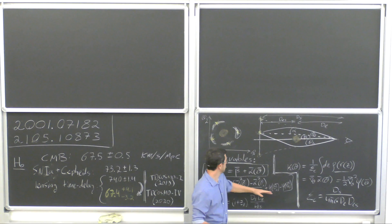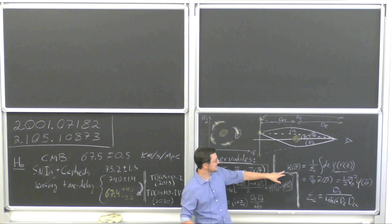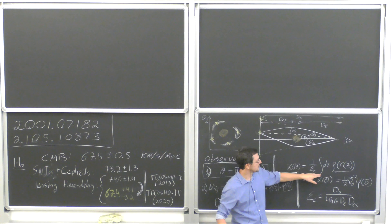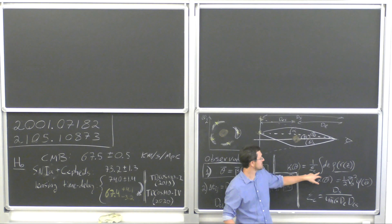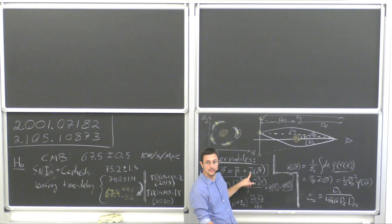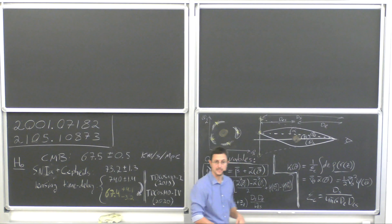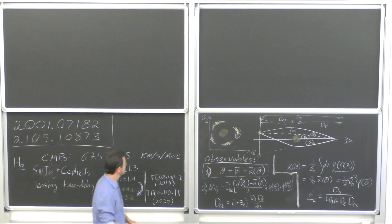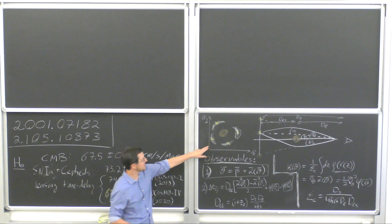The problem is that observable number one is only sensitive to convergence. Convergence takes cosmology but it's normalized by the actual mass of the lens, which you never know. So you can never measure cosmology just from this part — you measure the cosmology normalized by the mass of the lens. Therefore, you need the second observable.